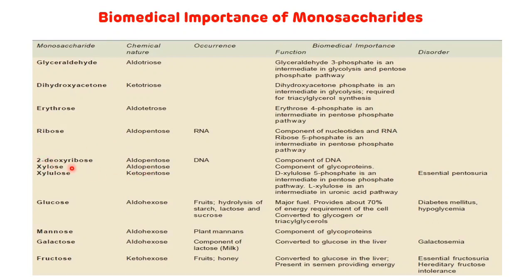Xylose is an important component of glycoprotein. Xylulose, an example of ketopentose, is present as an intermediate in the pentose phosphate pathway. L-xylulose is an intermediate in the uronic acid pathway, and the disorder associated with xylulose is essential pentosuria.